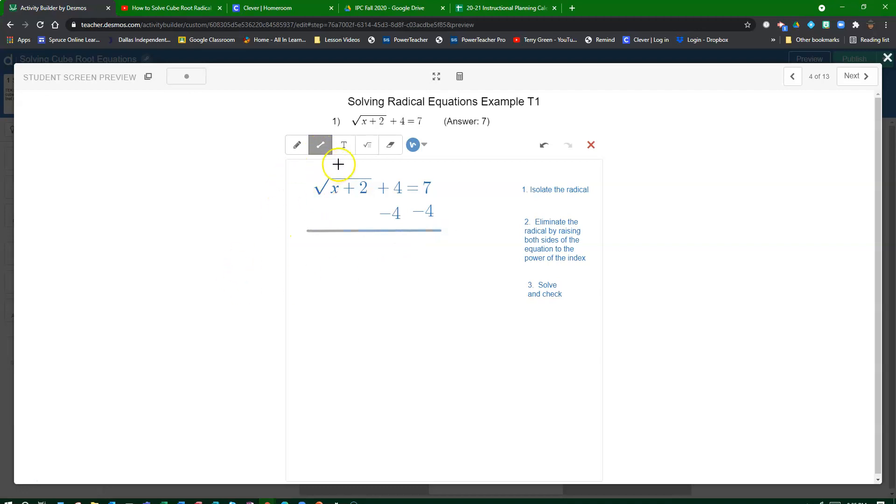Okay, when we do that, we'll end up with really just this part, and now 7 minus 4 is 3. So we have isolated the radical. That's step number one.